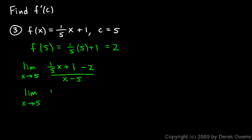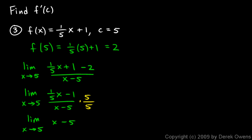We have the limit as x approaches 5 of 1/5 x minus 1 over x minus 5. To get rid of the 1/5, we multiply the top and bottom of the fraction by 5, giving us the limit as x approaches 5 of x minus 5, distributing the 5 across the numerator.